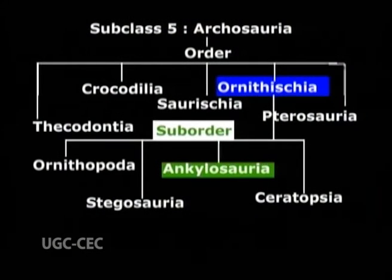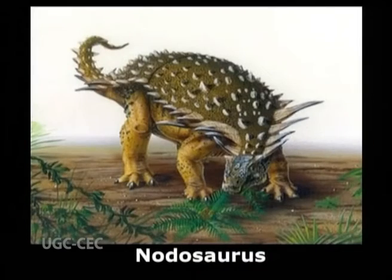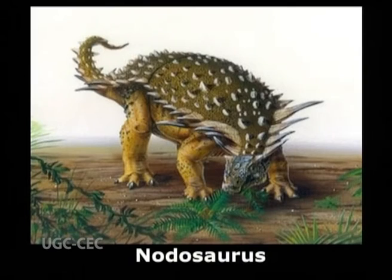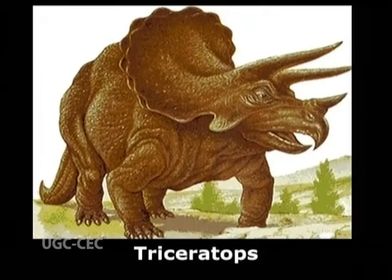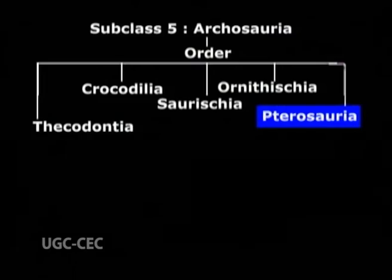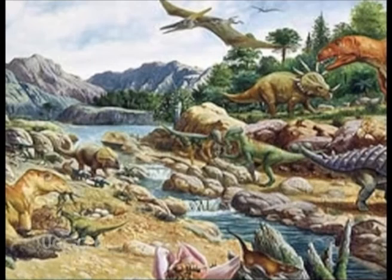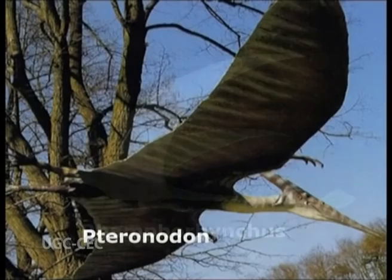Suborder 3, Ankylosauria. Examples are Ankylosaurus and Nodosaurus. Suborder 4, Ceratopsia. Example: Triceratops. Order 5, Pterosauria — present during Jurassic to Cretaceous. Examples are Rhamphorhynchus and Pteranodon.